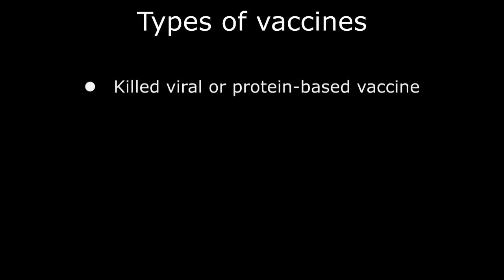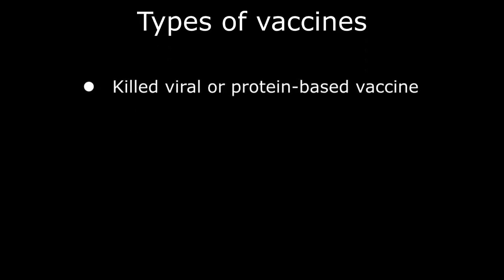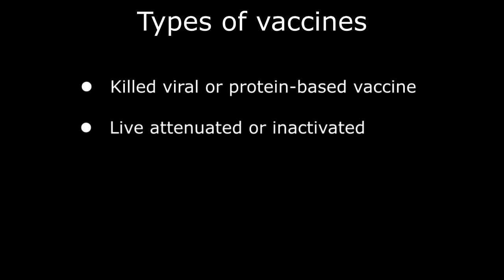These include killed viral or protein-based vaccines, live attenuated or inactivated viral vaccines, and genetic type vaccines including viral vector and lipid nanoparticle vaccines. We're going to take a look at each of these.